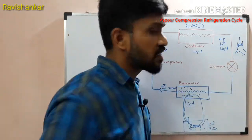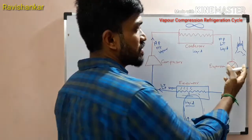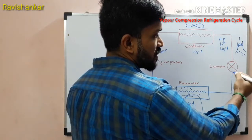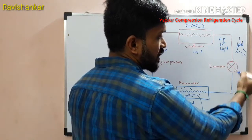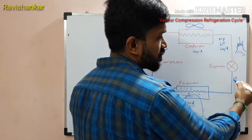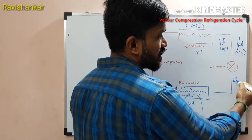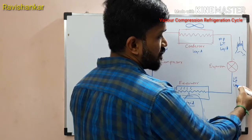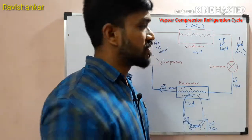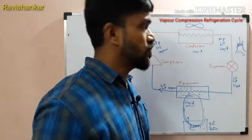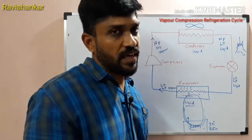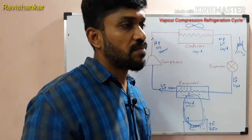Now we have liquid at high temperature and low pressure. We have pressure on this expansion device. This expansion device output is low temperature, low pressure, liquid vapor. Liquid is 10 to 20% vapor. If you have an expansion, you will have a heat loss. There are many restrictions.